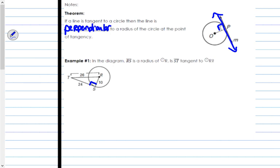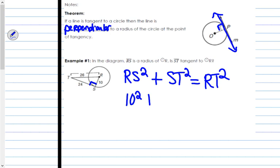Because if it's a right triangle, then RS squared plus ST squared would equal RT squared, the Pythagorean theorem. So, if that is indeed true, then yes, ST is tangent to the circle. So, RS is 10 squared. ST is 24, so 24 squared.